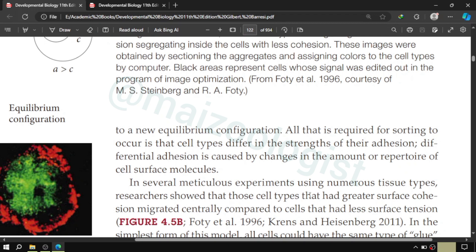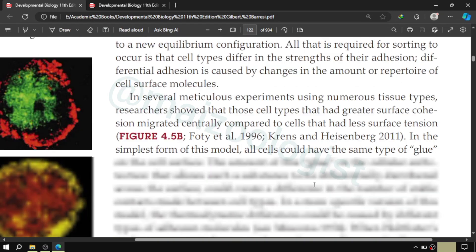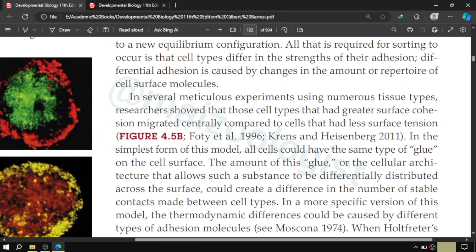All that is required for sorting to occur is that cell types differ in strength of their adhesion, and differential adhesion is caused by changes in the amount of the cell surface molecule. In several meticulous experiments using numerous cell types, researchers have showed that those cell types that had greater surface cohesion migrated centrally compared to the cells that had less surface tension.